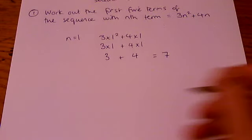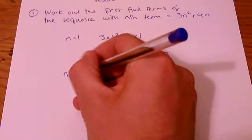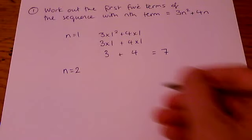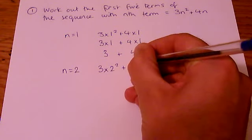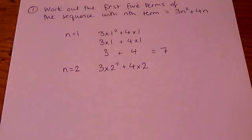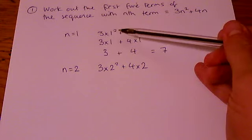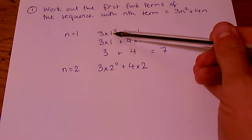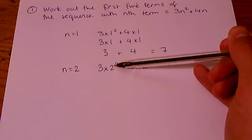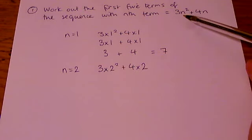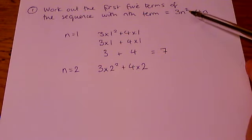If we try now the second term when n is equal to 2, we must replace the n with a 2. Notice how it's been replaced in each position. So this one here was a 1 has now become a 2. That's because the formula says we must do 3 lots of n squared.